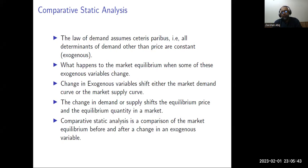The law of demand and the law of supply assume that determinants of the demand and supply other than price are constant. We assume they are exogenous — exogenous means they are taken as given. For example, when you define the law of demand, you take income, fashion, taste, and weather as given. You only change the price and see how the price change affects the quantity demanded.